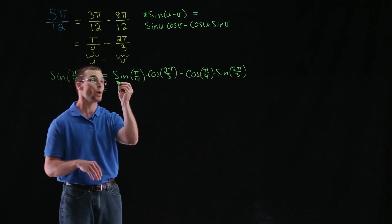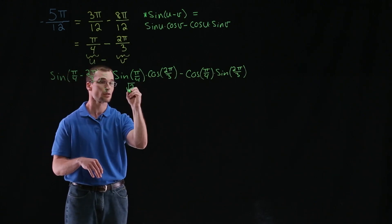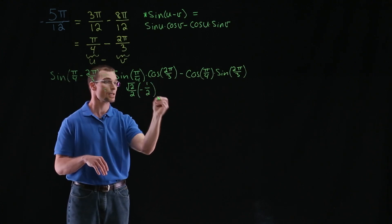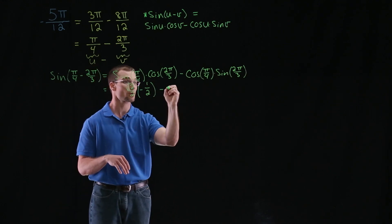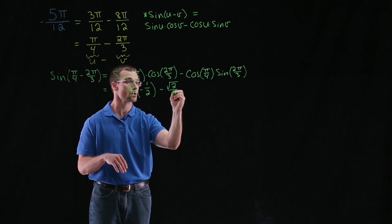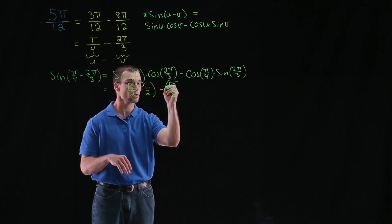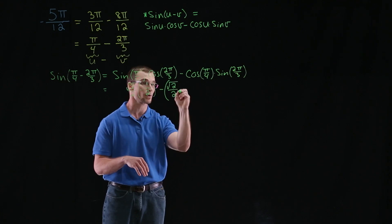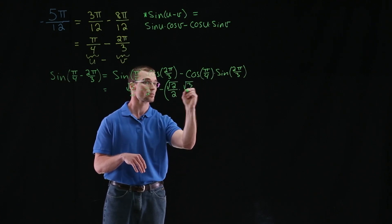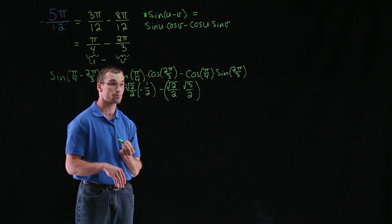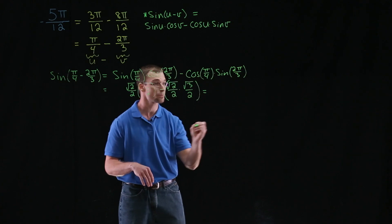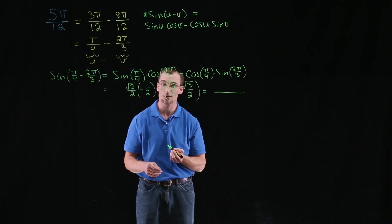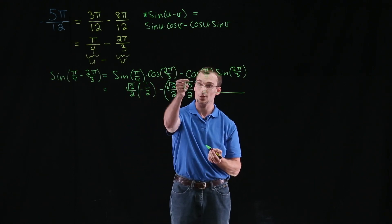Each of these we can find the values of because there are those standard angles that we know. Well, sine of pi over 4 is positive root 2 over 2, times cosine 2 pi over 3 is negative 1 half, minus cosine pi over 4, again, is positive root 2 over 2. And we're subtracting this whole quantity, so we should put in some parentheses — minus root 2 over 2 times sine of 2 pi over 3, which is positive root 3 over 2.